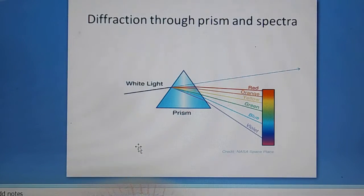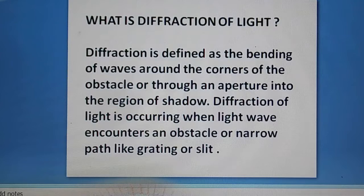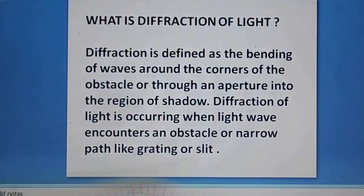Grating is produced by very close fine lines on either glass or metal sheet. And why the diffraction of light? What is diffraction of light? Diffraction is defined as the bending of waves around the corners of obstacles through an aperture into a region of shadow. Diffraction of light is occurring when light waves encounter an obstacle or narrow path like a grating or slit.